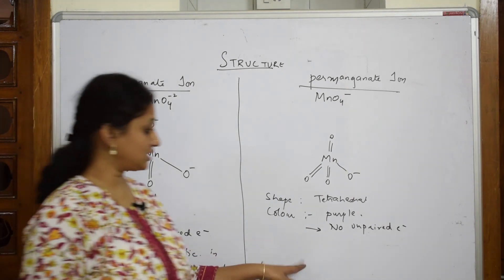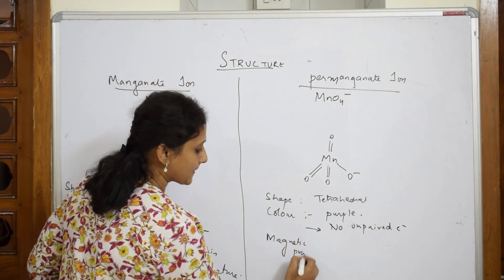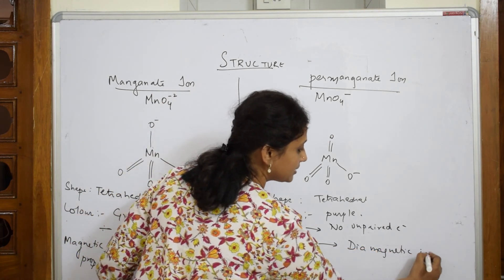When I have to see permanganate's magnetic property, it is diamagnetic in nature because it doesn't have unpaired electrons.